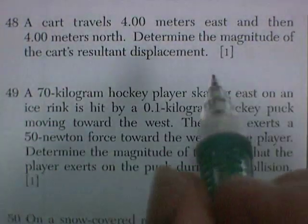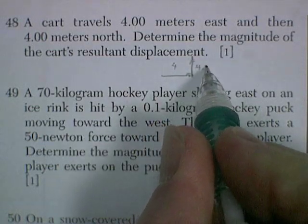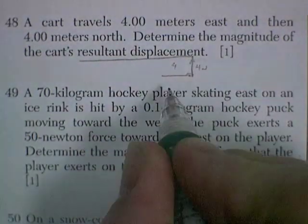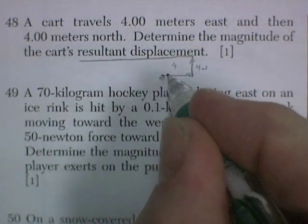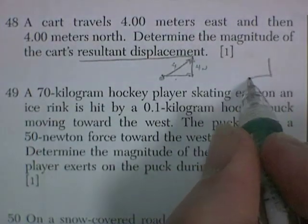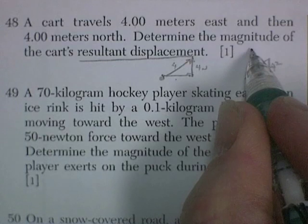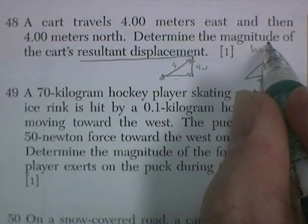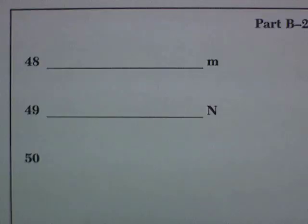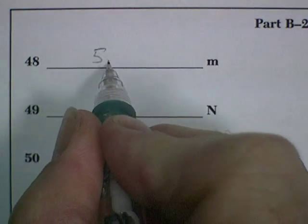So 48, a cart travels 4 meters east and then 4 meters north. Determine the magnitude of the cart's resultant displacement. Displacement is from the beginning of the trip to the end, regardless of the path you took. So that's a right triangle. 4 squared plus 4 squared is equal to the hypotenuse. So the hypotenuse is equal to the square root of 4 squared plus 4 squared. Calculator time. And it's the square root of 32, which is about 5.65.